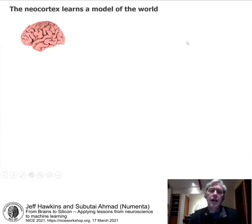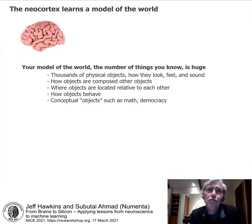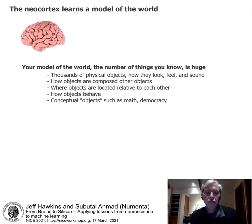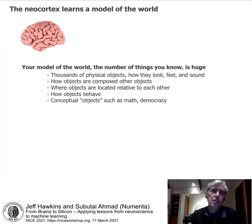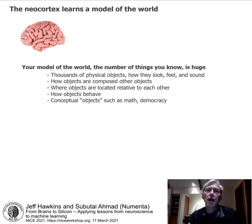The neocortex learns a model of the world. The number of things you know is huge: thousands of physical objects, what they look like, feel like, sound like when used. We know how objects are composed of other objects — a bicycle has wheels, a frame, tires, chains. We know where objects are located relative to each other, how objects behave, and the sensorimotor contingencies involved. We also know non-physical things — conceptual objects like mathematics and democracy. We have a model of these things in our heads.